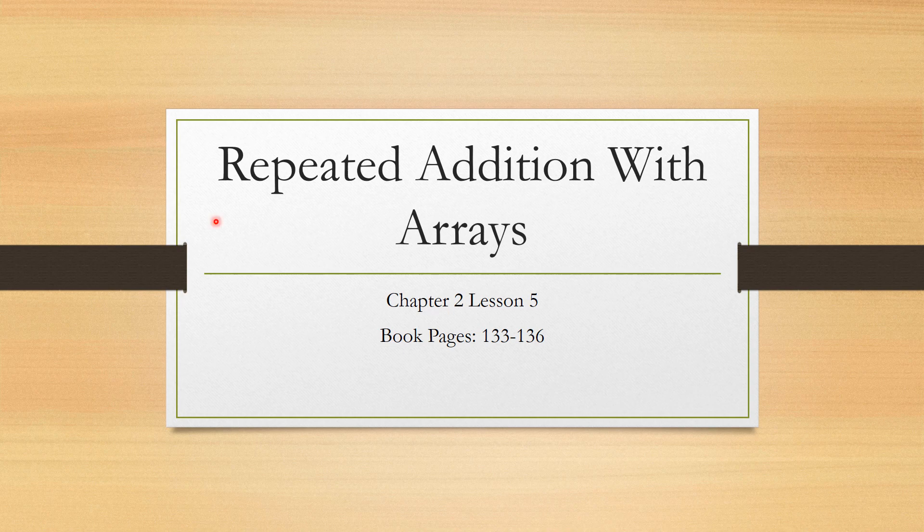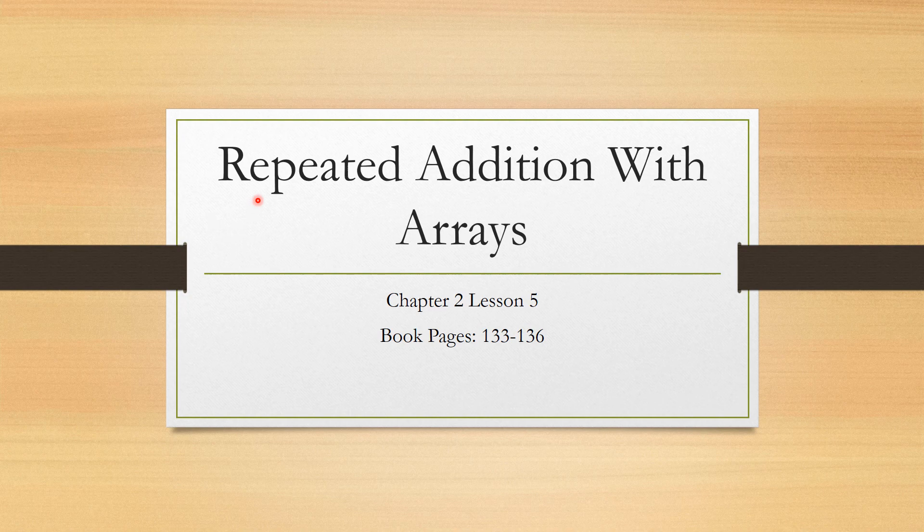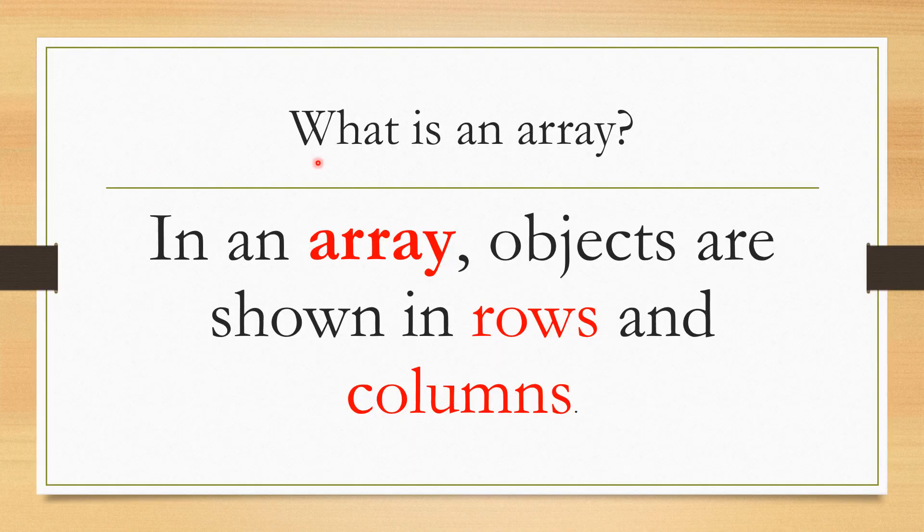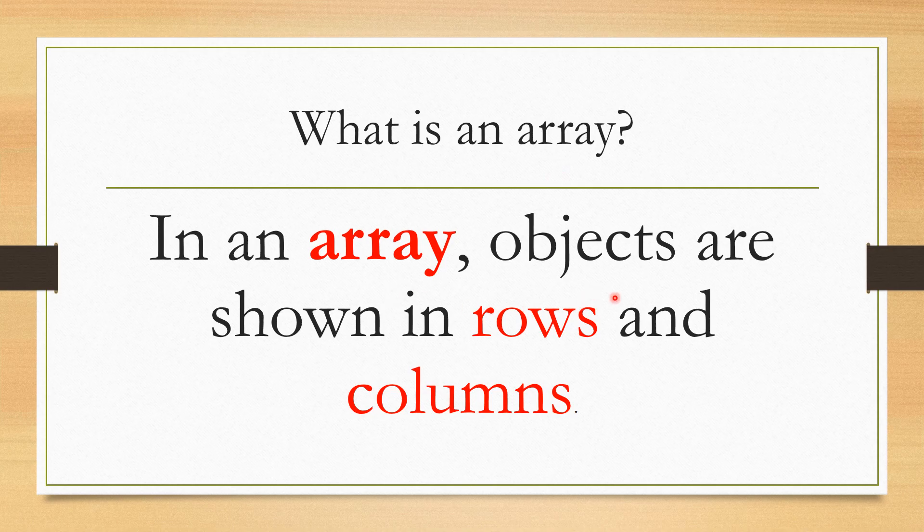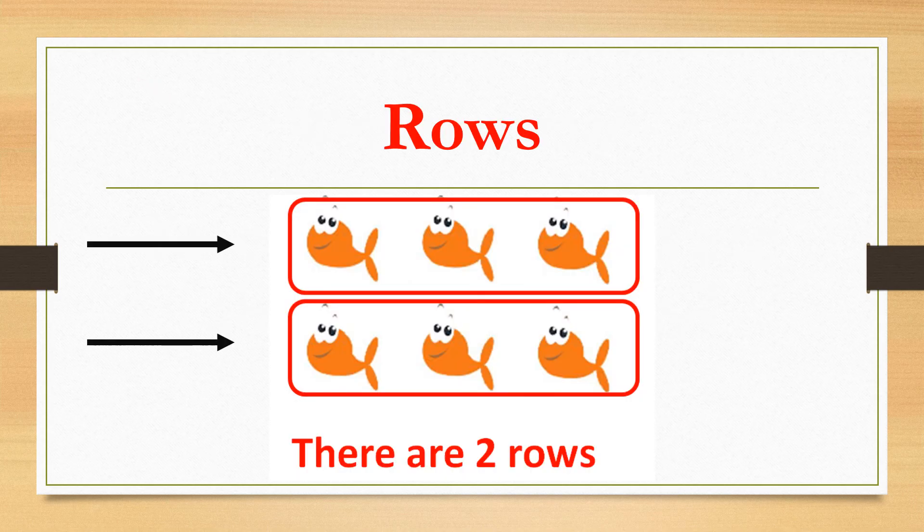Hello! Today's math lesson is about repeated addition with arrays. What is an array? In an array, objects are shown in rows and columns. What do I mean by rows? Rows move from left to right. How many rows do I have here? I have two rows.